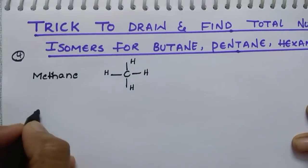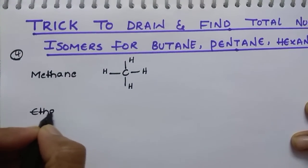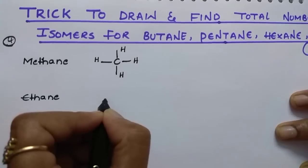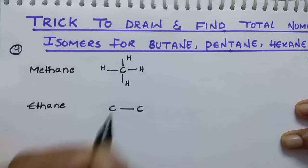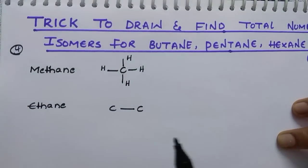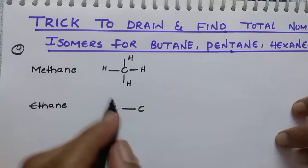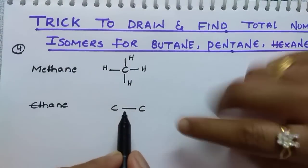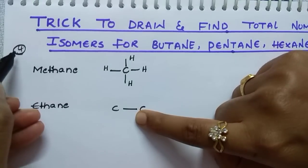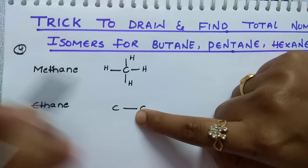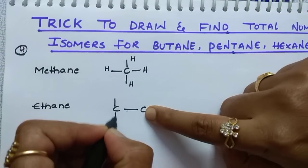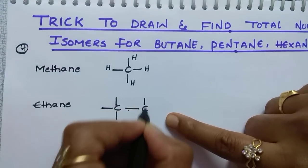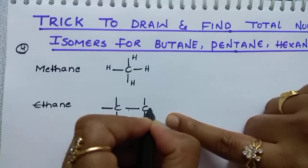Next one is ethane. Ethane consists of 2 carbons, so write 2 carbons. Carbon valency is 4. Already one bond is there between them, and total it should consist of 4 bonds. One bond is there, so how many bonds do you have to place? 4 minus 1 is 3. So you have to place 3 bonds on each carbon.